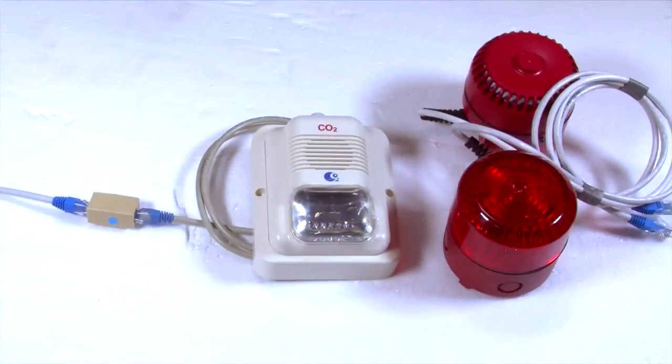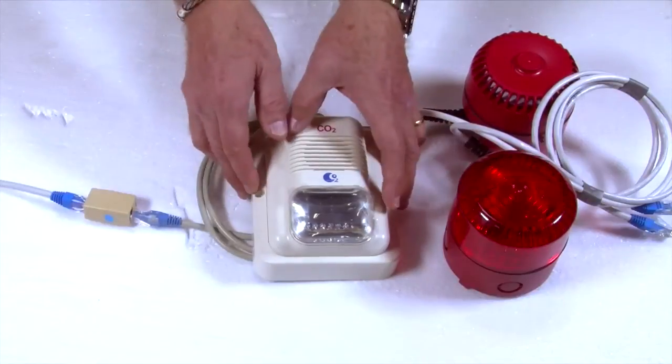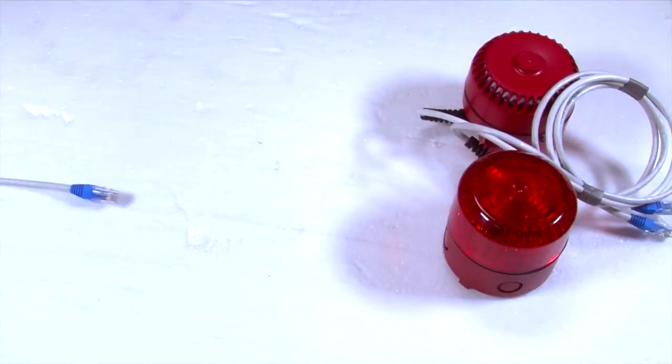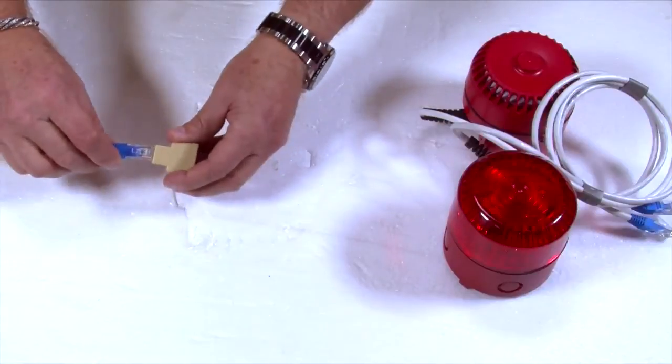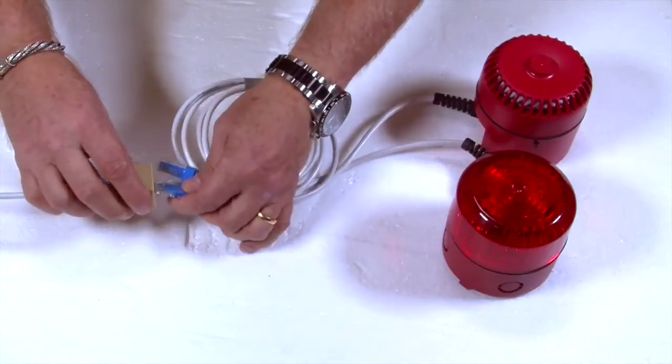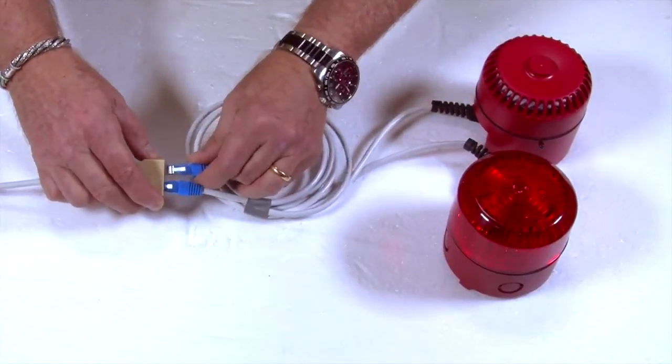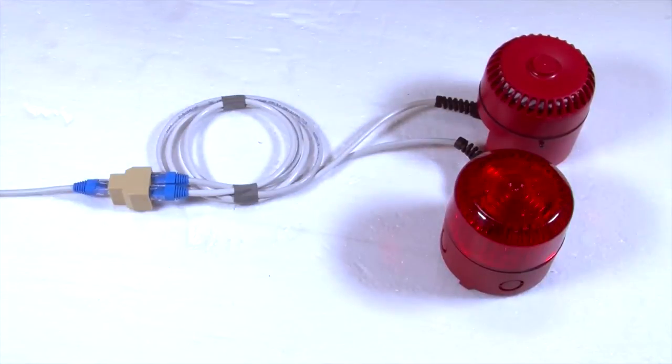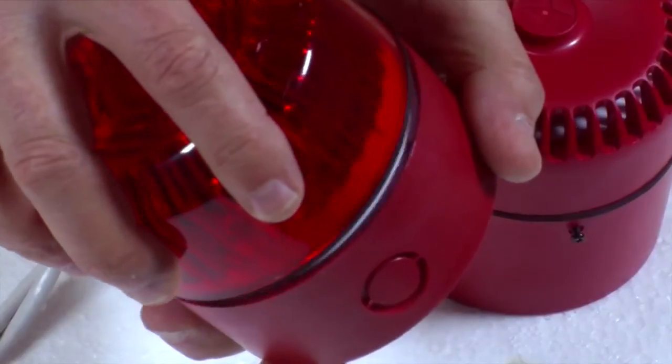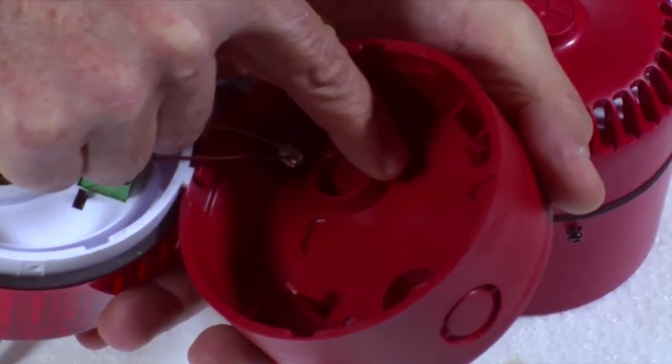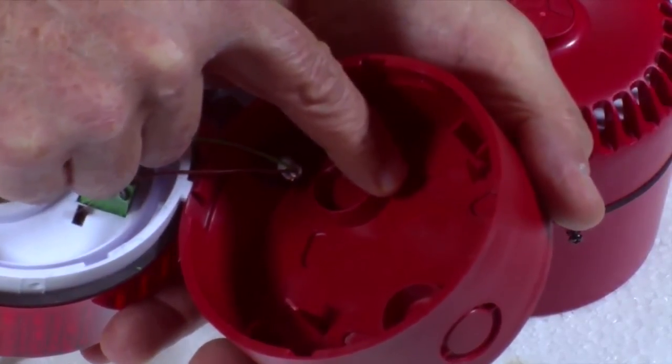If you need the all-weather alternative instead of the standard horn strobe, simply disconnect the units. Connect the warning lamp and the siren. To mount the warning lamp and the siren, you simply open the units and mount screws in the indentations that are clearly marked on the inside.